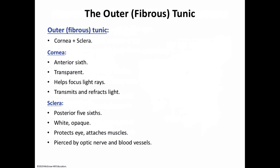The sclera, seen anteriorly as the white of the eye, is tough and tendon-like, protecting and shaping the eyeball and anchoring those six extrinsic eye muscles. Posteriorly, where the sclera is pierced by the optic nerve (cranial nerve number two), it is continuous with the dura mater of the brain. The cornea is modified to form the transparent portion, taking up only the anterior one-sixth of the fibrous layer, bulging out anteriorly and acting as the crystal-clear window that lets light enter the eye — it is the major light-bending apparatus of the eye.